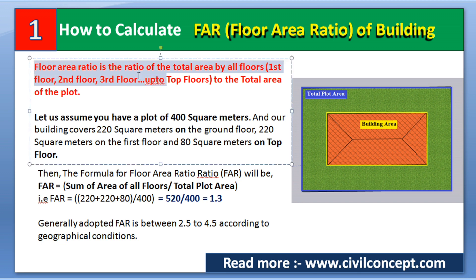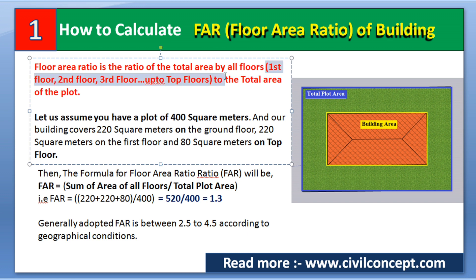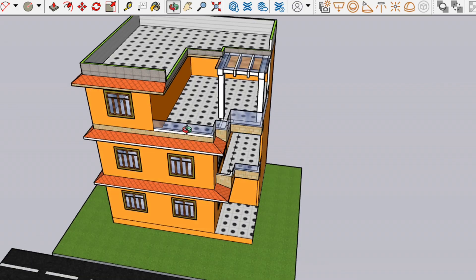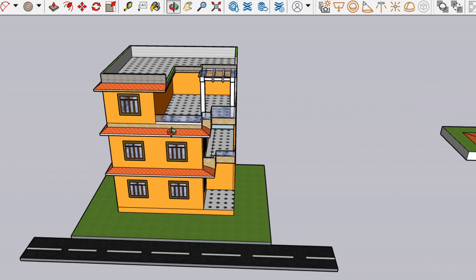Floor Area Ratio is a ratio of the total area of all floors — first floor, second floor, third floor, and up to the top floor — to the total area of the plot. So there are two terms: first, we have to sum up all the areas of the floors from ground floor up to the top floor; and second, the total area of the plot.